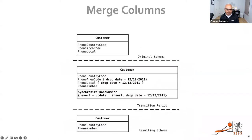Let's talk about an example. I have a customer table with three phone-number-related columns. Since people move around nowadays, I want to merge all three phone number columns into one. So you introduce a new column, move all the data, and at the end what's left is a phone number and a country code. You could also make one column non-nullable — for example, first name should not be null.